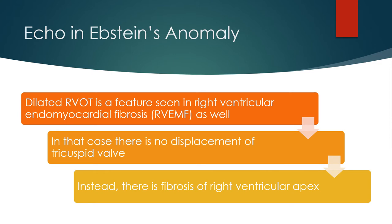Dilated RVOT is also a feature seen in right ventricular endomyocardial fibrosis. In that case, there is no displacement of the tricuspid valve; instead, there is fibrosis of the right ventricular apex.